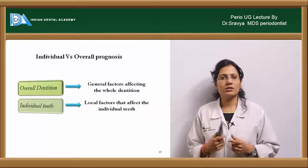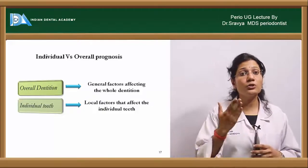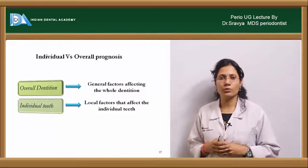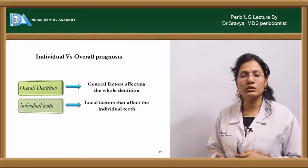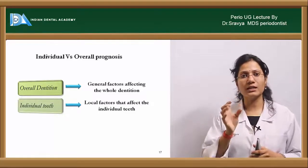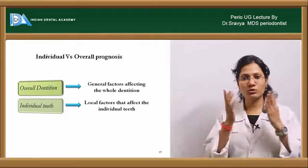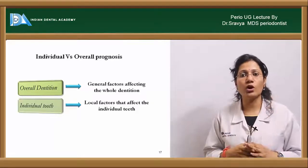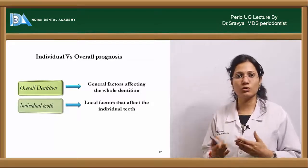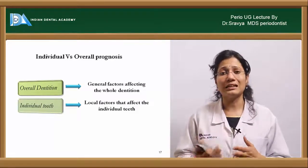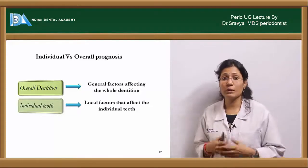There is another classification: you can also classify prognosis as individual prognosis and overall prognosis. Individual prognosis means you are giving a prognosis for that individual tooth, whereas overall prognosis means it is for the overall dentition. Most of the time students get confused between overall and individual prognosis and land up giving the same kind of prognosis for both.